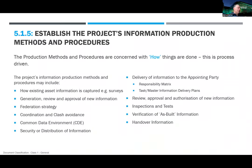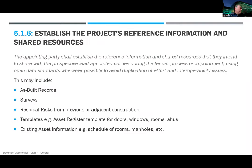There's another document that's really important: the project information production methods and procedures. This is really about the 'how.' How do you do surveys? How do you generate, review and improve information? How do you federate models? How do you do clash detection? How is the common data environment run and set up? How do you distribute information? It's like work methods or work procedures in an ISO 9001 context — it's how you do things. A big thing for us is handover information: how we get information in the format we want. Everyone tends to think about it at the end, but it really needs to be thought about from the beginning.